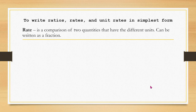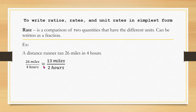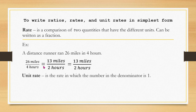Next, let's talk about rate. A rate is a comparison of two quantities that have different units, and it can be written as a fraction or expressed as a decimal. For example, a distance runner runs 26 miles in 4 hours. This can be expressed as the fraction 26 miles over 4 hours, which simplifies to 13 miles over 2 hours by dividing both numbers by 2.